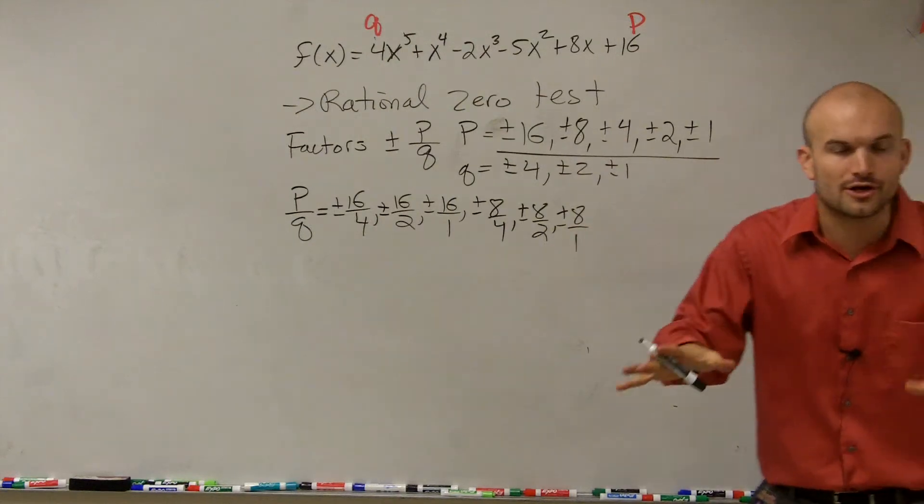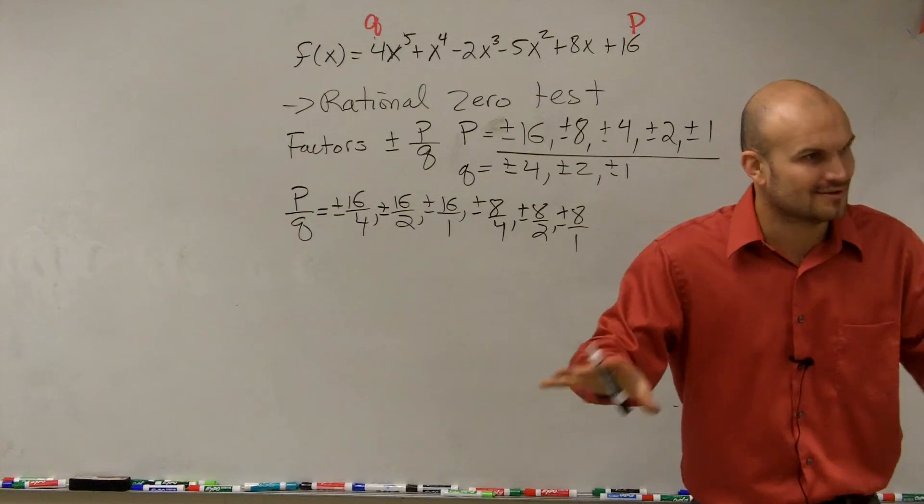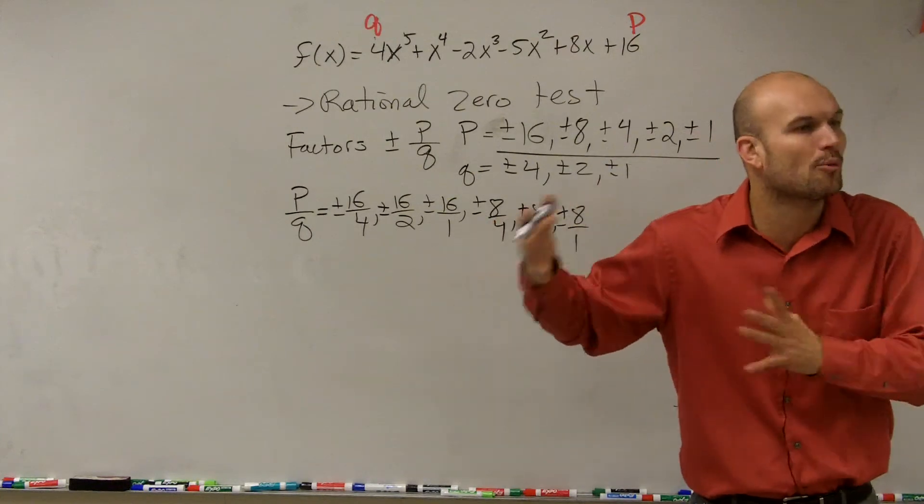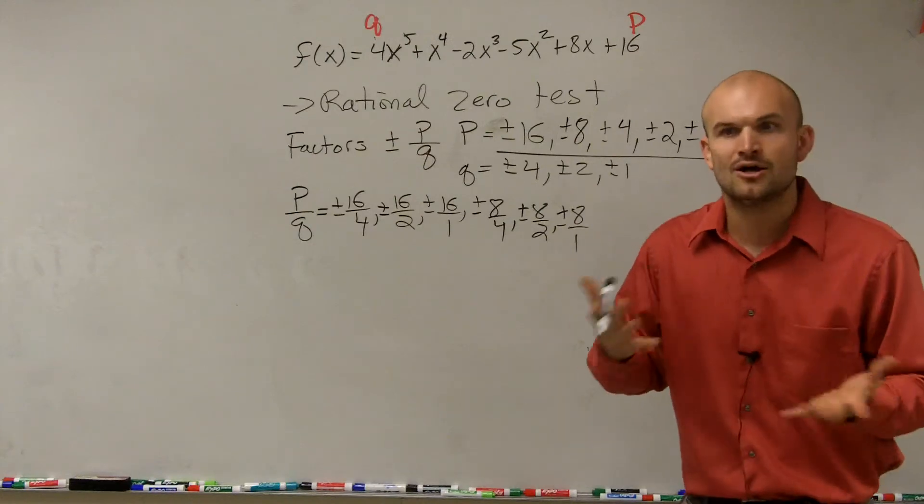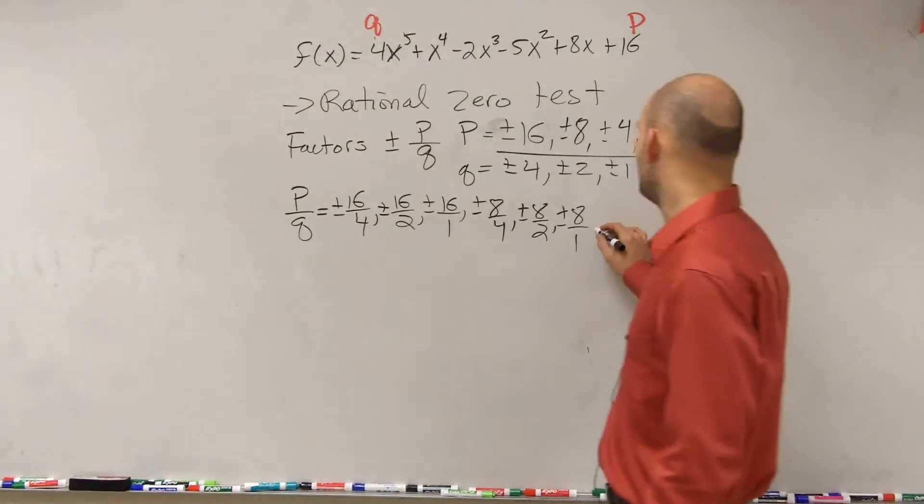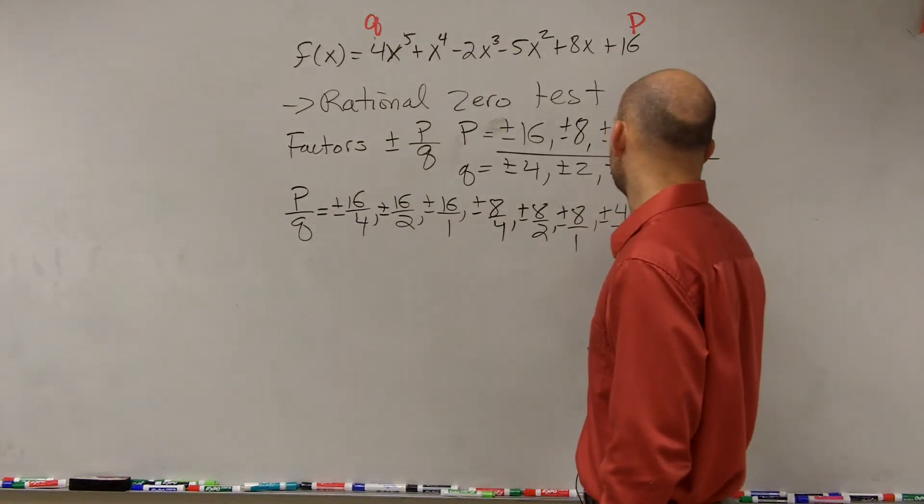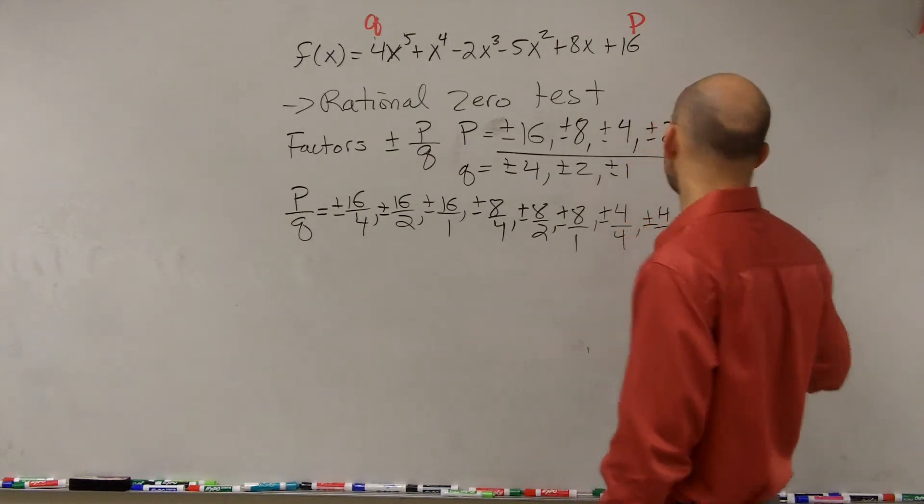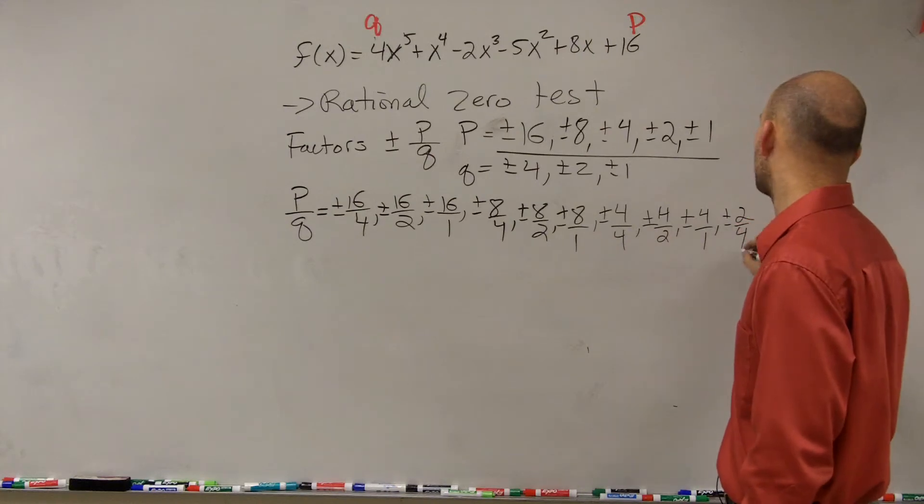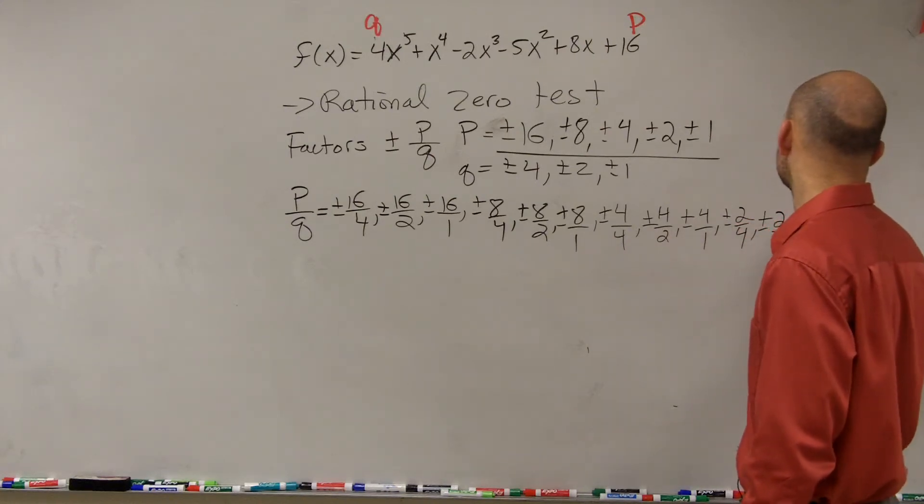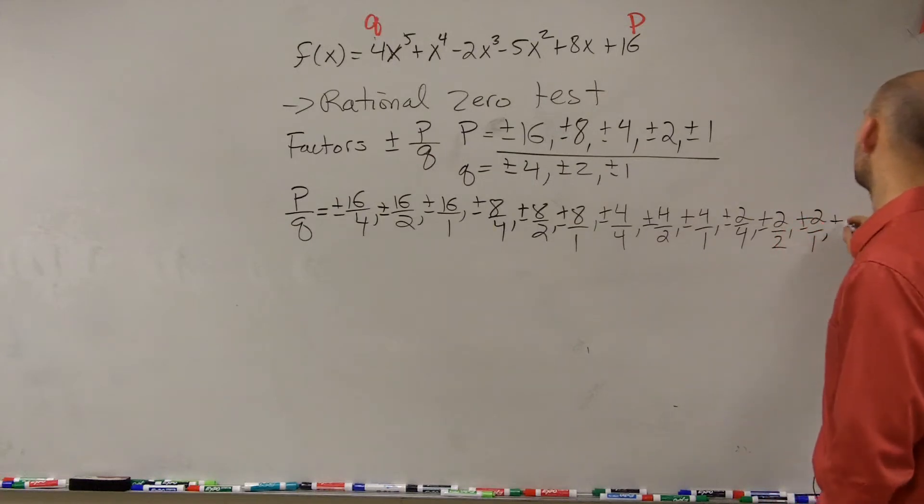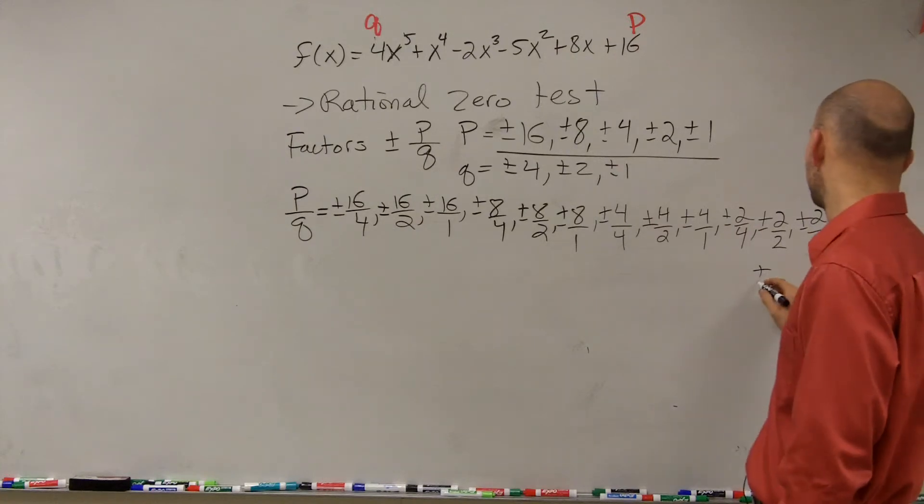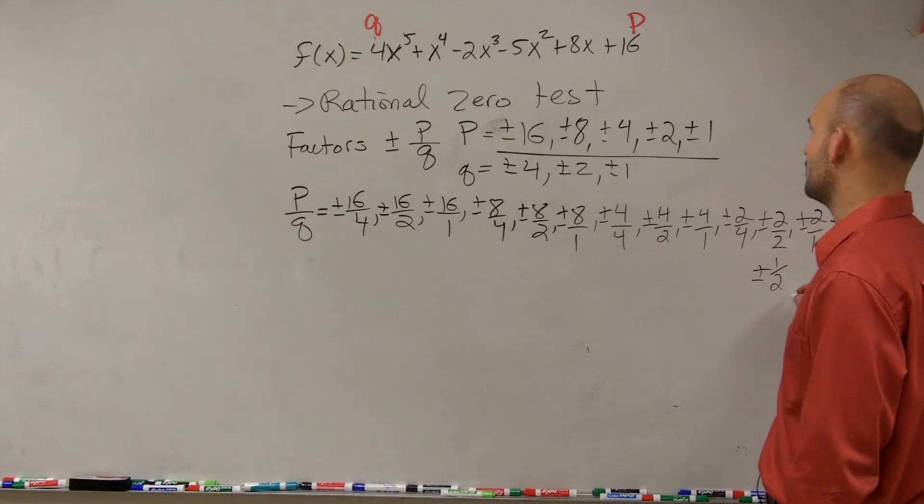You're going to want to write this down for your notes right now, but I'm saying for on a test, you don't need to go through this whole process. You'll get used to it. So we have plus or minus 16 divided by 4, plus or minus 16 divided by 2, plus or minus 16 divided by 1, plus or minus 8 divided by 4, plus or minus 8 divided by 2, plus or minus 8 divided by 1, plus or minus 4 over 4, plus or minus 4 over 2, plus or minus 4 over 1, plus or minus 2 over 4, plus or minus 2 over 2, plus or minus 2 over 1, plus or minus 1 over 4, plus or minus 1 over 2, and plus or minus 1 over 1.